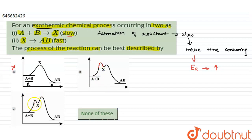In option C, first peak is lower, so you can eliminate option C because for slow step, the time consuming reaction will be taking place. And if there is more time taken, then the activation energy will be higher.